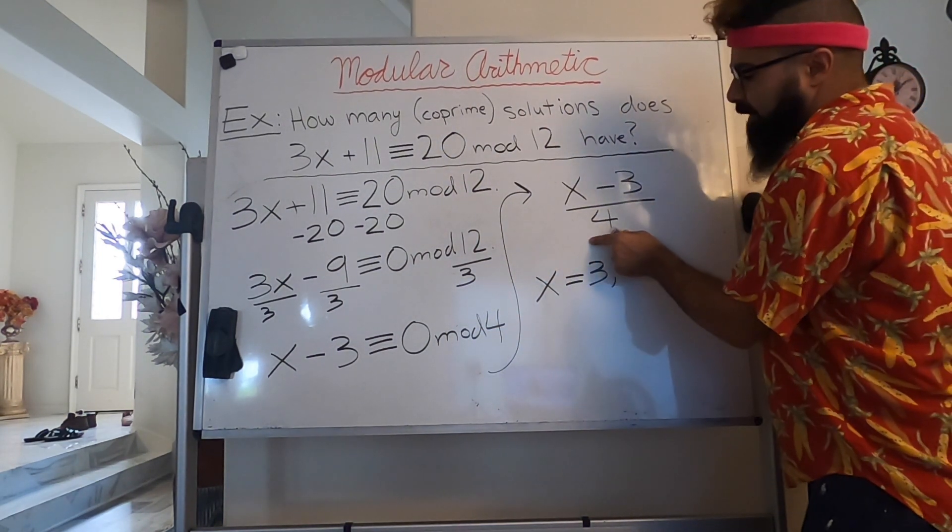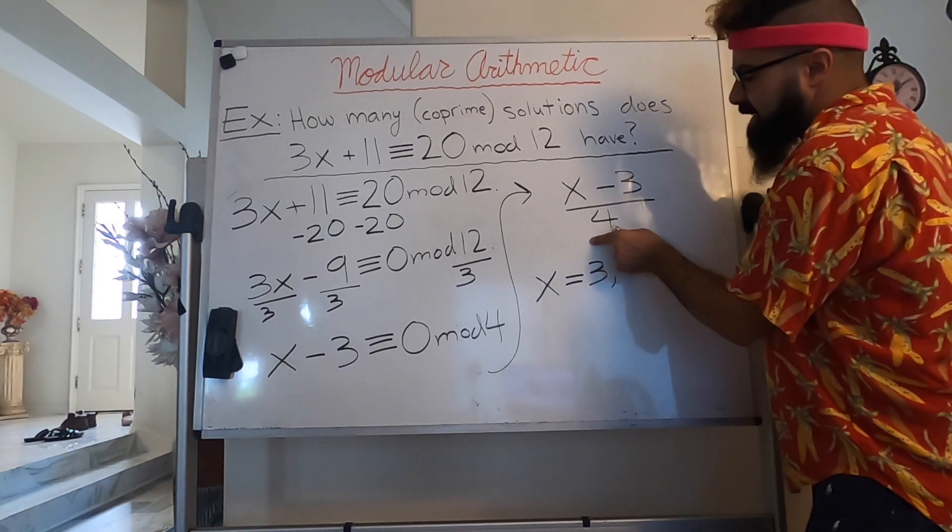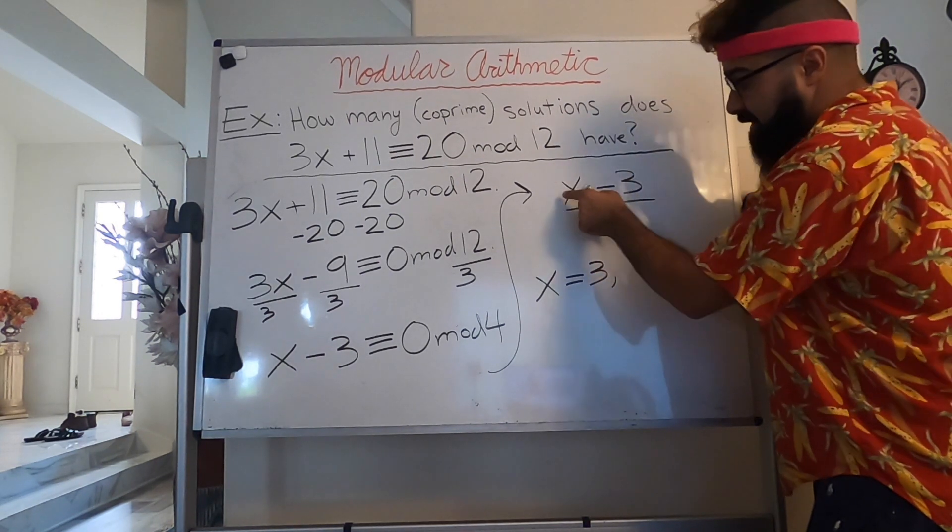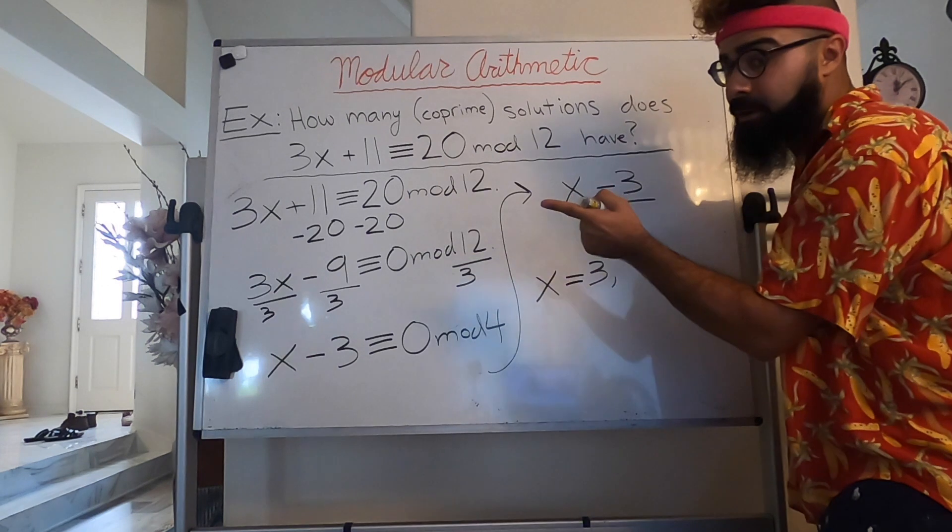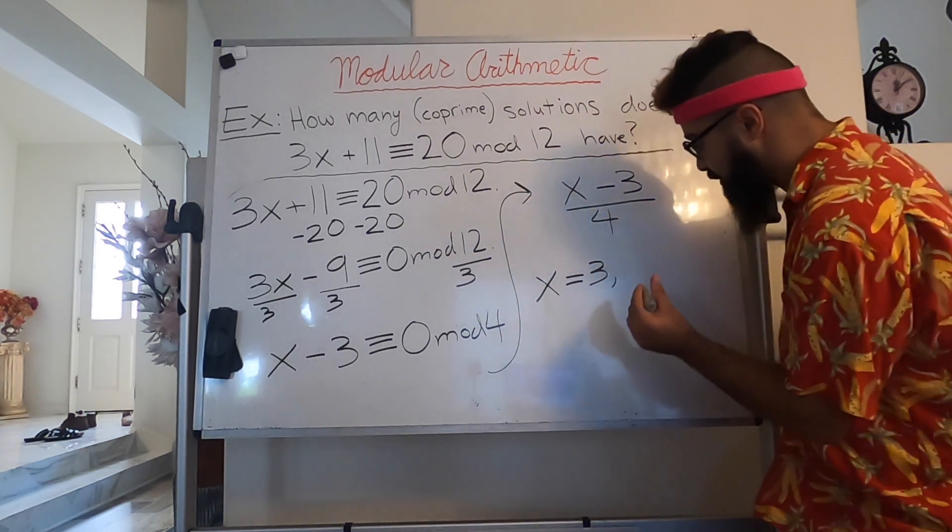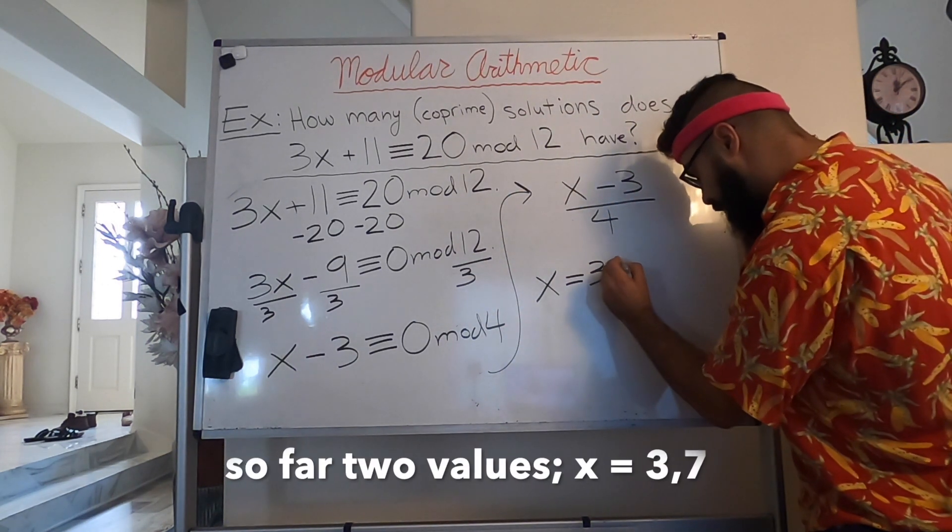Next in line, typically they are going to be moving up in increments of 4. So let's test x equals 7 next. Well, if x equals 7, 7 minus 3 is 4, divided by 4 is 1, still an integer. So we have 3, we have 7.